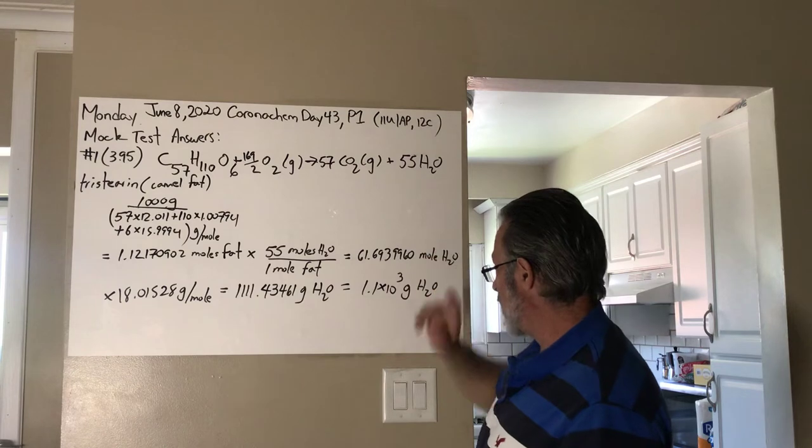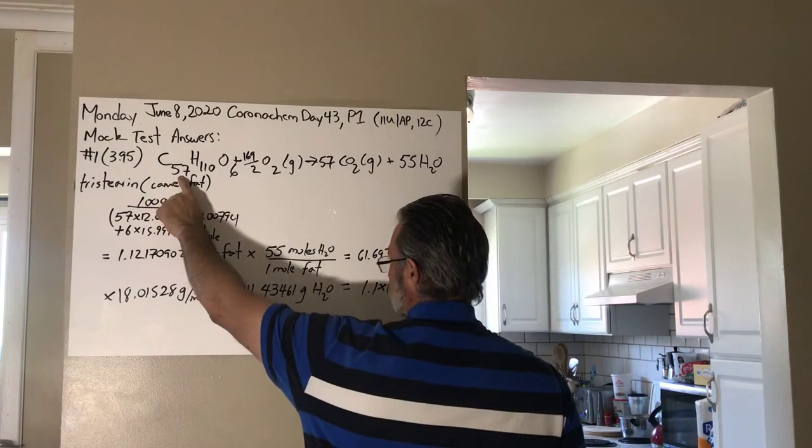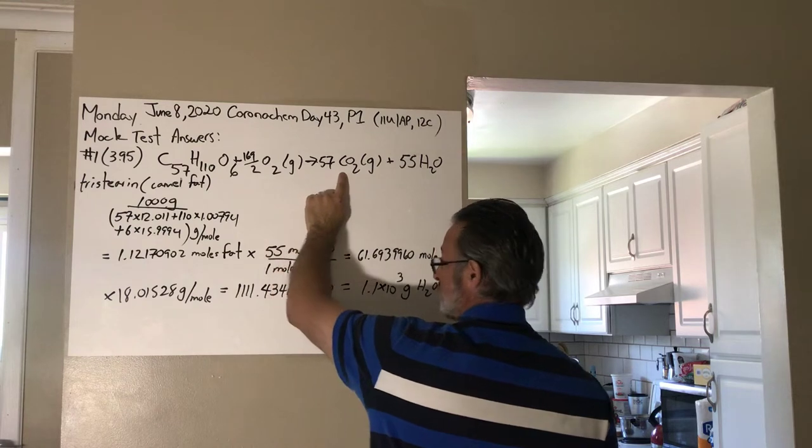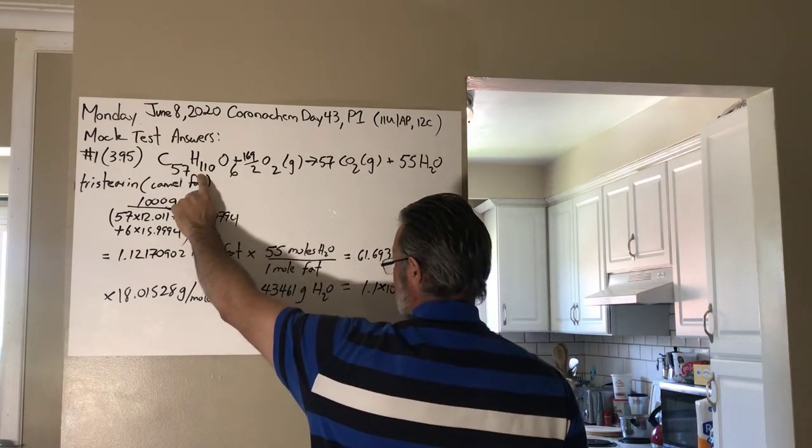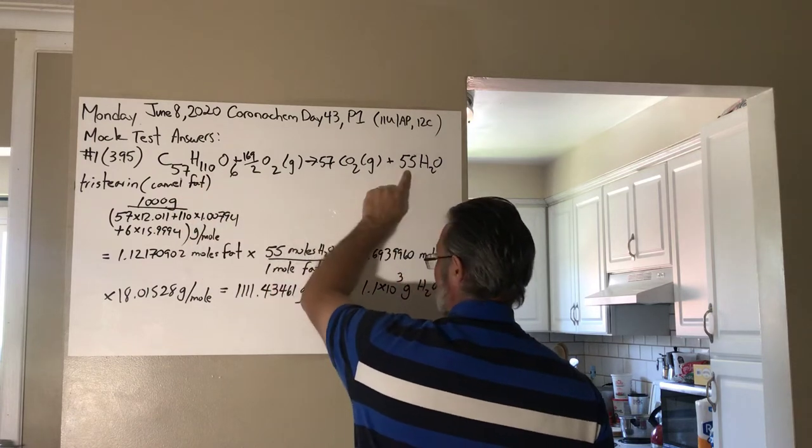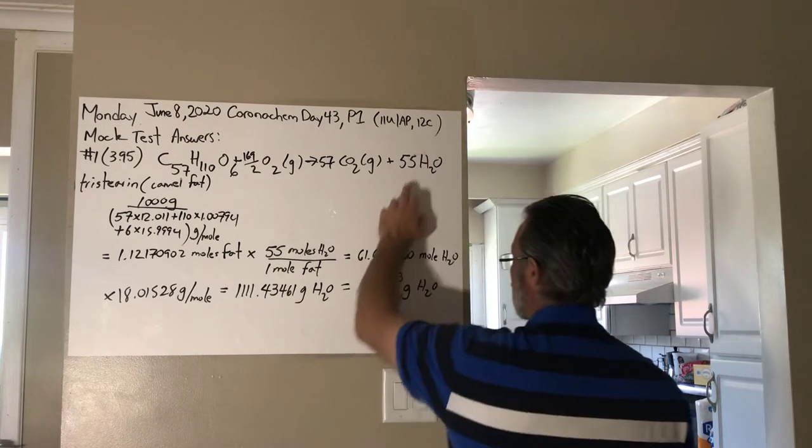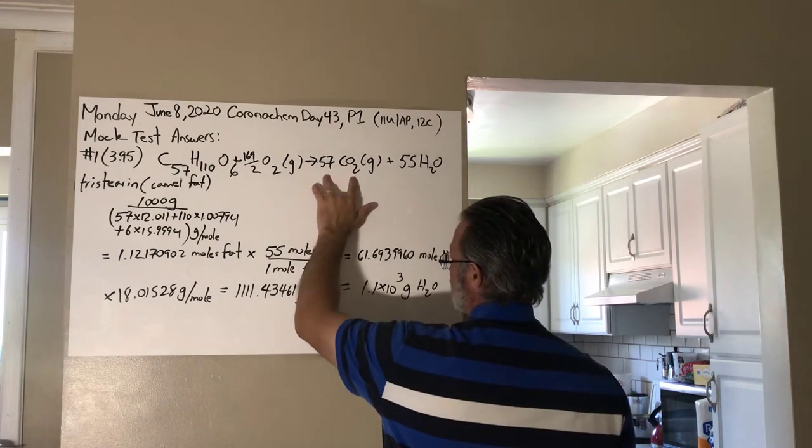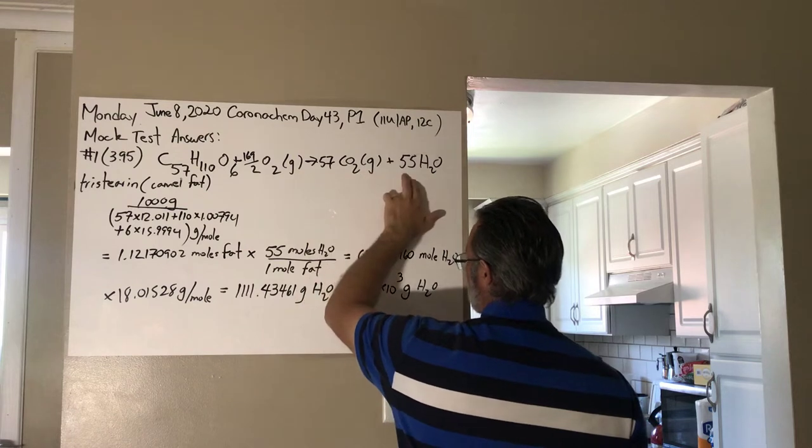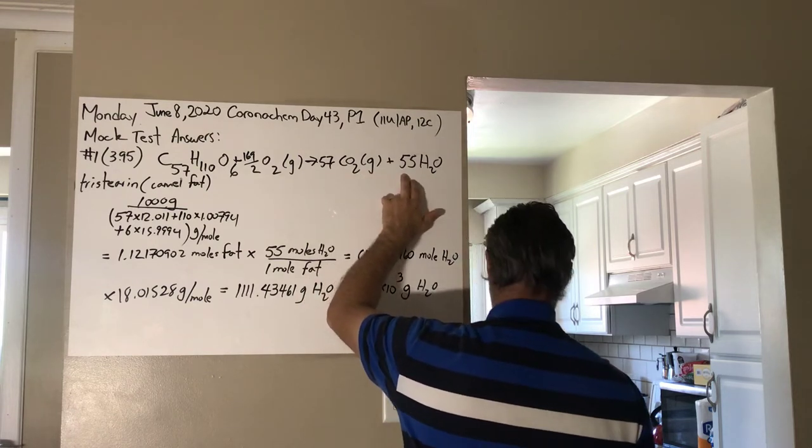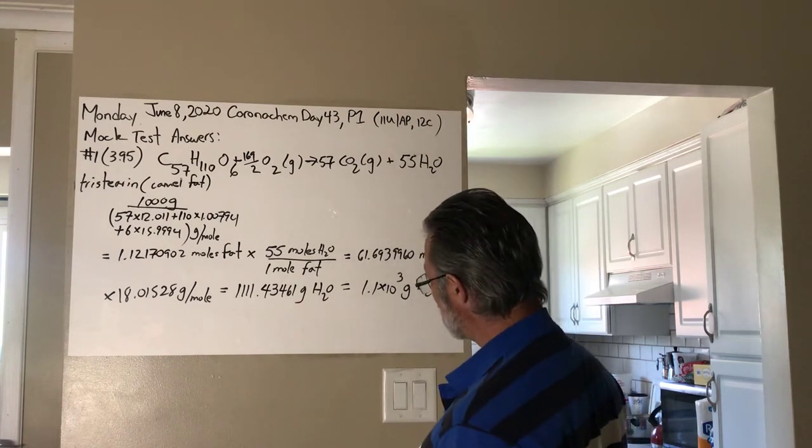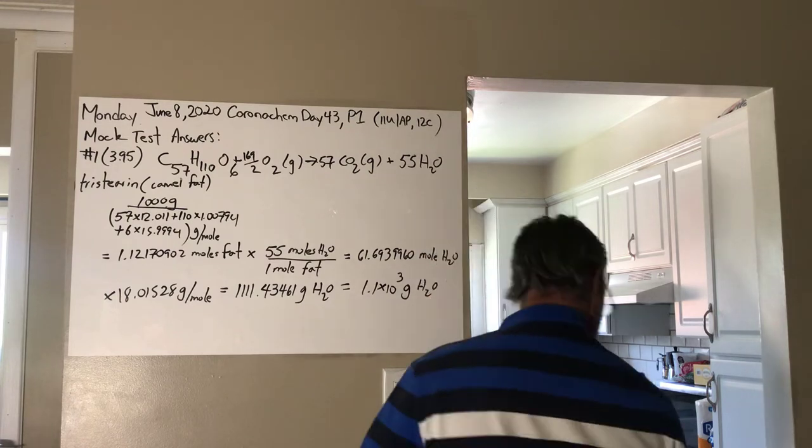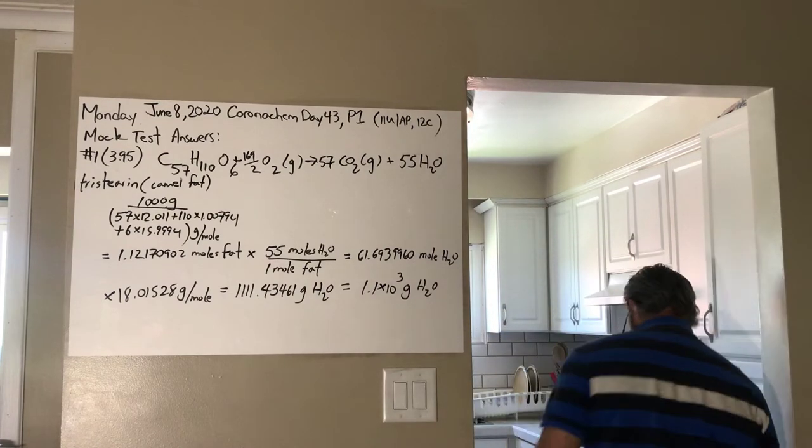I just want to double check that I balanced it correctly, though. So we have 57 carbon atoms. So that's going to produce 57 carbon dioxide. So the carbon that was here is now going to be breathed out in the form of carbon dioxide. There's 110 hydrogens in the tristearin, so the animal's going to generate 55 moles of water because 55 times 2 gives you the 110 hydrogens. Now we've balanced the oxygens. We have 57 times 2 oxygens here, which is 104. 104 plus the 55 from the water, it gives you 159.